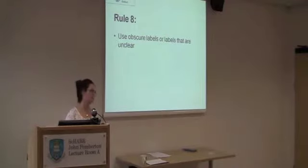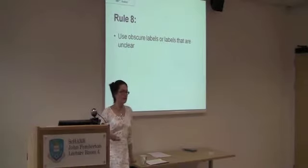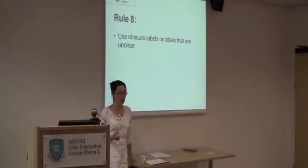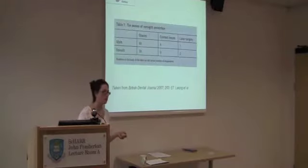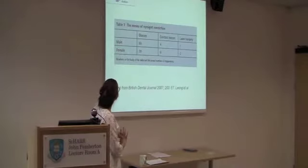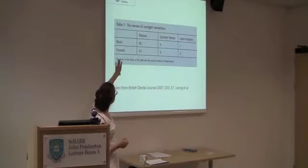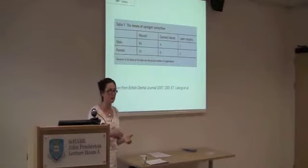Rule eight: use obscure labels or labels that are unclear. In your database you might enter visit one, visit two, visit three, visit four — and you know that visit one is baseline, visit two is three months, visit three is six months and so on. But unless you label it properly, people will not know that. This is a table from the British Medical Journal showing the means of eyesight correction — numbers in the tables are actual numbers of respondents. When you read the title 'means of eyesight correction,' you initially think you're talking about an arithmetic mean, not the type of eyesight correction method used. A clearer title would have helped.